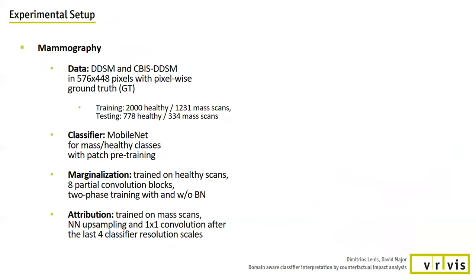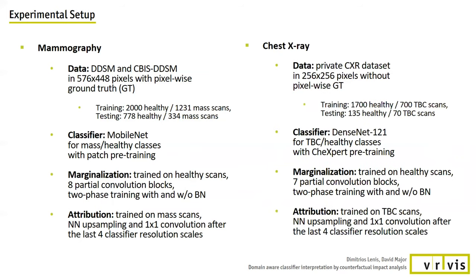For mammography, we took the CVS DDSM set with pixel-wise ground truth and augmented it with healthy samples of the DDSM dataset. The MobileNet binary classifier was applied for mass and healthy classification. The marginalization network was trained on healthy scans with arbitrarily generated hole masks to mimic intermediate stages of attribution training. The attribution network training utilized only mass scans. We also applied our method on a private chest X-ray dataset with no pixel-wise ground truth, using the DenseNet-121 classifier for tuberculosis and healthy classification, with the same marginalization and attribution setup.